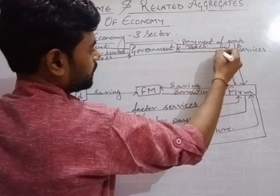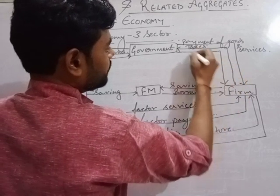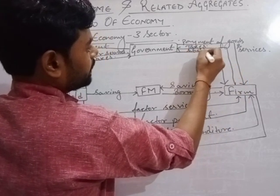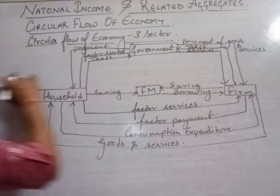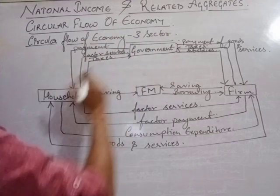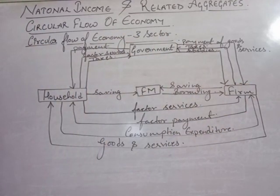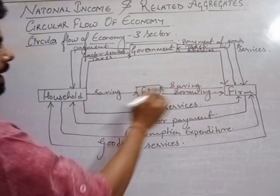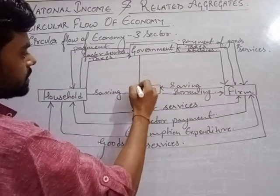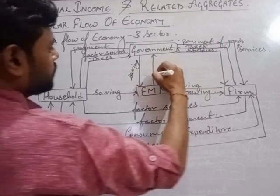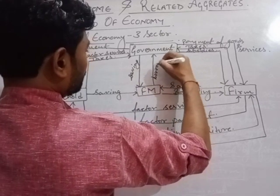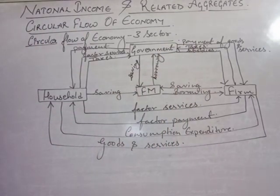The government in turn provides subsidies. This is the circular flow of economy in three sectors. So it is the two-sector model — if you add the government to the role, along with the household, the banking and financial market, and the government interactions — that is your three-sector structure.